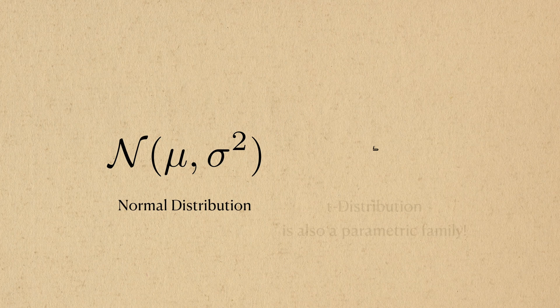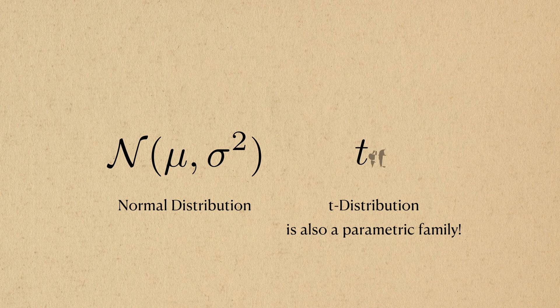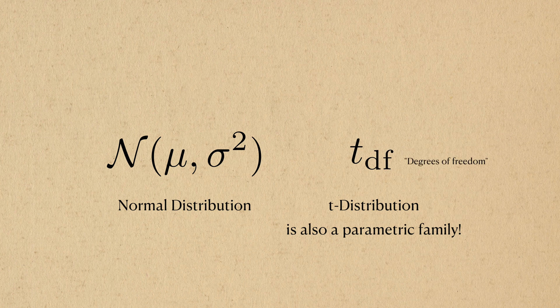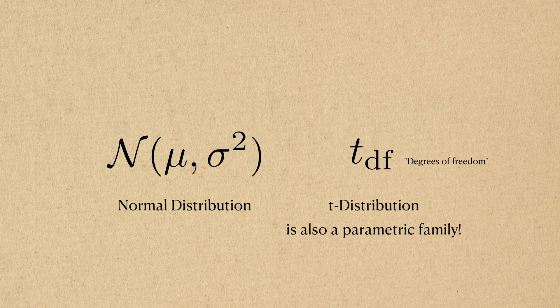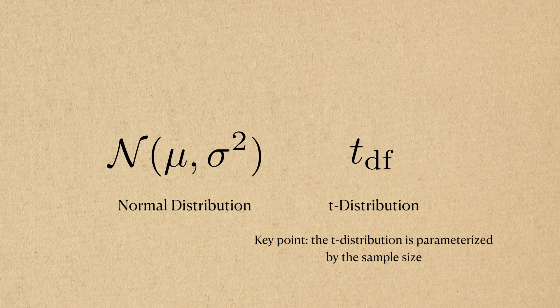Like the normal distribution, the t distribution is also a parametric family, and the name of this parameter is the degrees of freedom. We won't get into it in this video. It's enough to know that the t distribution is parameterized entirely by the sample size.